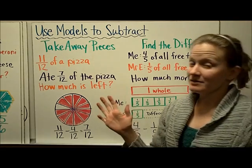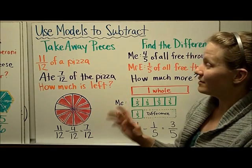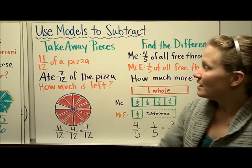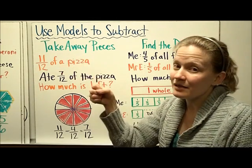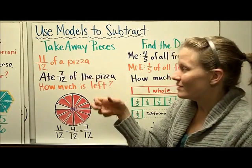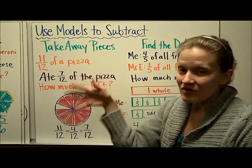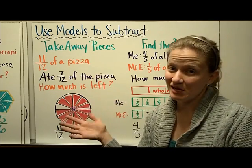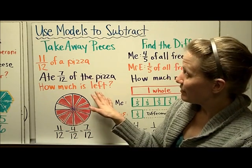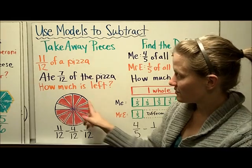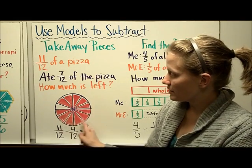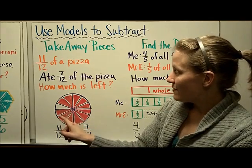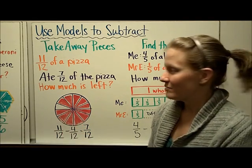So let's talk about subtracting fractions that have the same denominators. Let's use models first, just like we did for addition. You can think about it like taking away pieces. Subtraction is taking away something. So if you start with 11/12 of a pizza, and you eat 7/12 of a pizza, first of all, you're going to be sick, but then you might want to think about how much is left. So I've drawn my pizza here and colored in the amount that I'm starting with, which is 11 out of the 12 pieces, and then I'm going to... Whoops! I found a mistake.